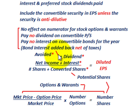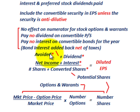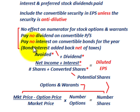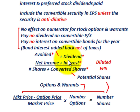The same applies to bond interest: there would be no interest on convertible bonds for the year because they would have been converted as of the beginning of the year. So we add that interest expense back, since it was included in year-end net income — but bond interest must be added back net of taxes, because it was tax deductible.